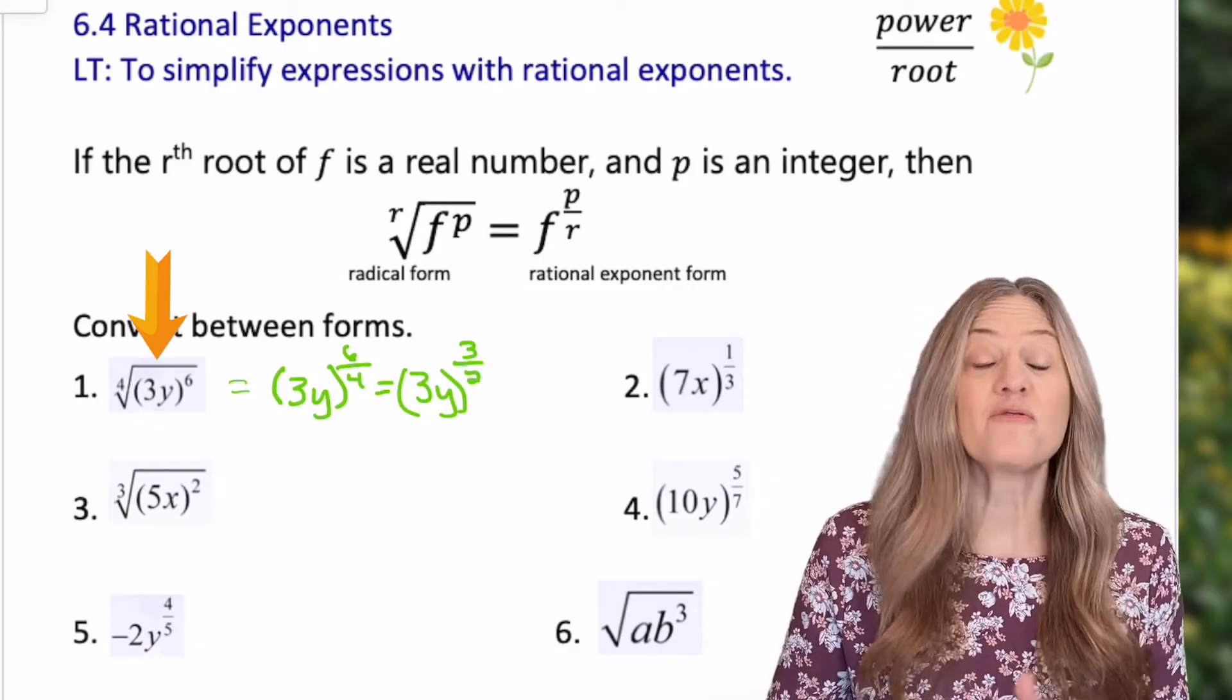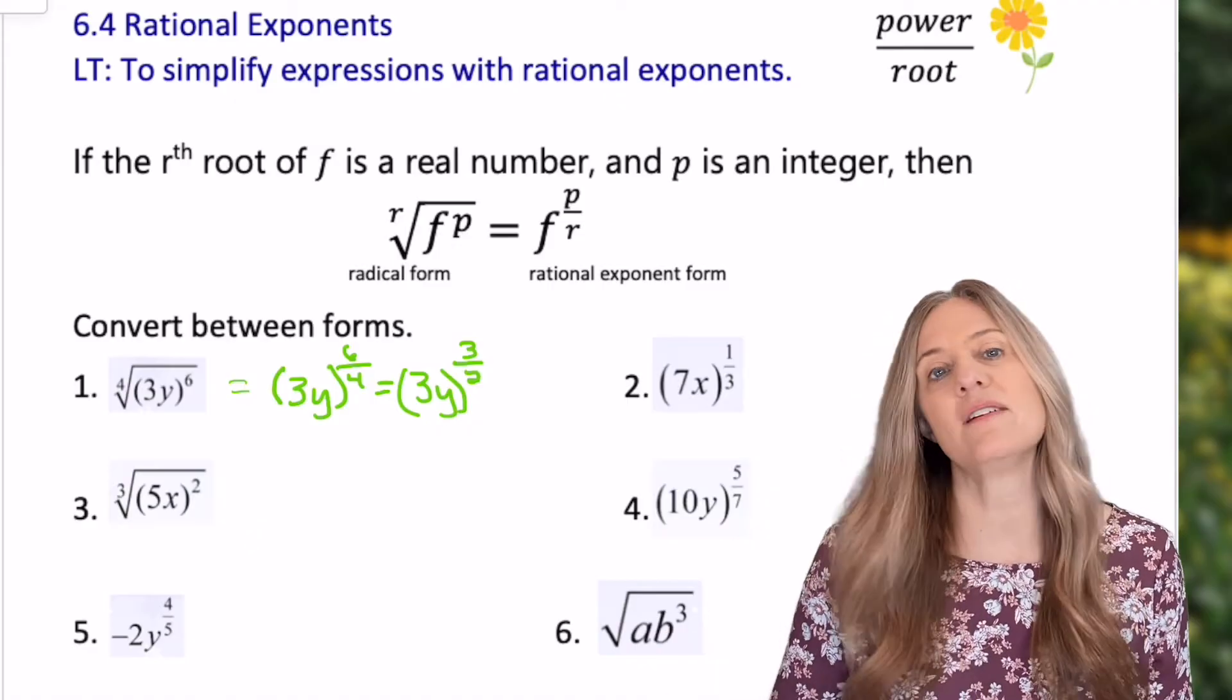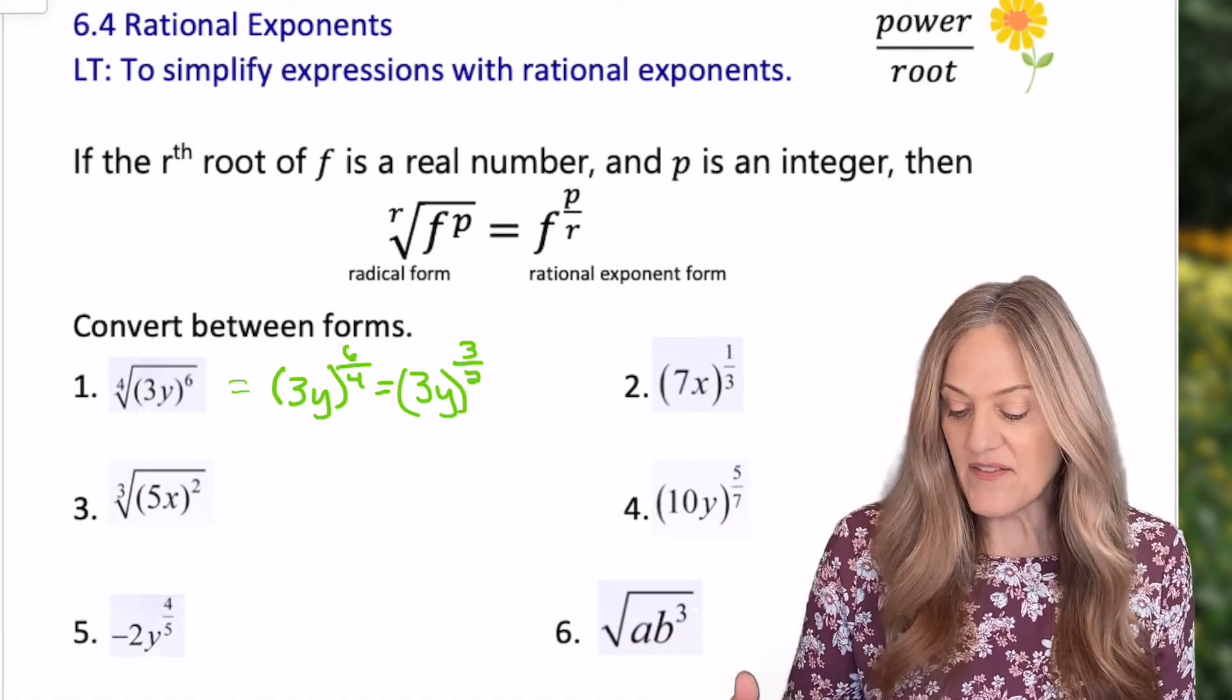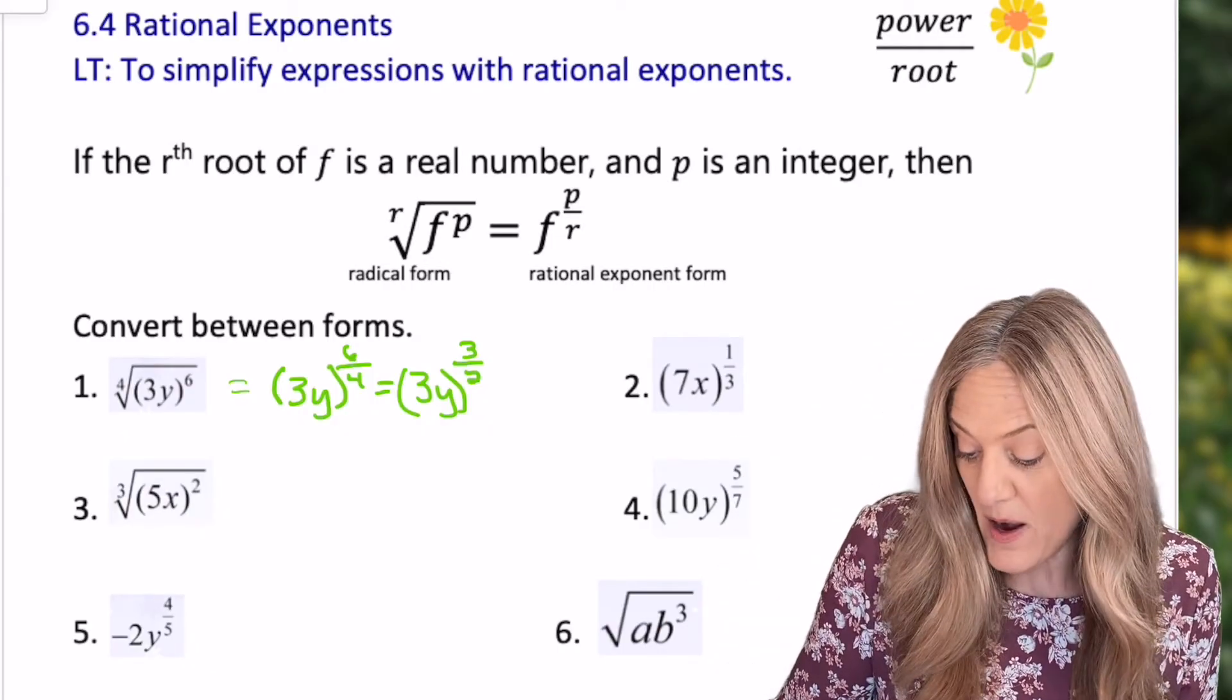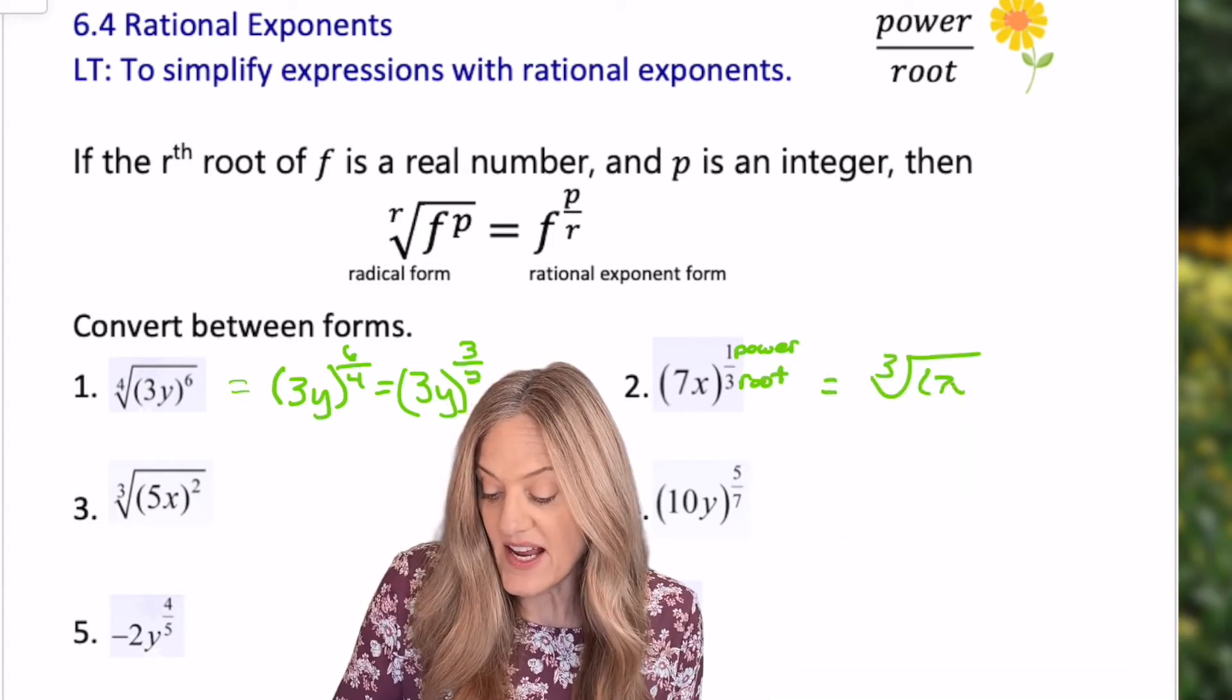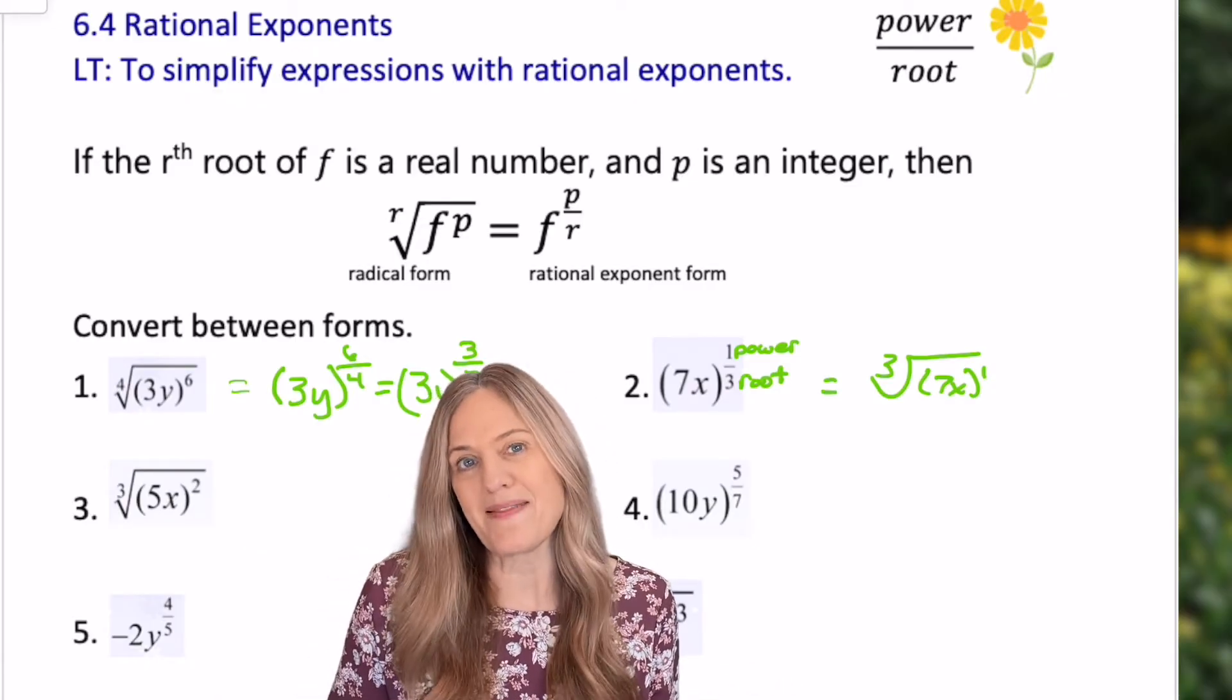We just converted from radical form to rational exponent form. Looking at number two, it's in rational exponent. Now we have to go back to radical form. Well, 7x in parentheses to the one third. Well, one is the power and three is the root. So we'll have the cube root of 7x to the first power. Because it's to the first power, we really don't need to write that part.